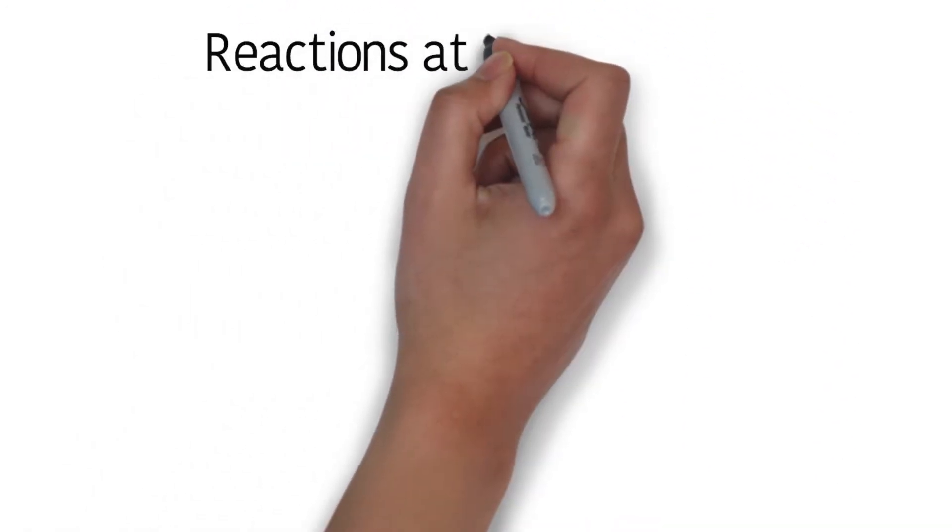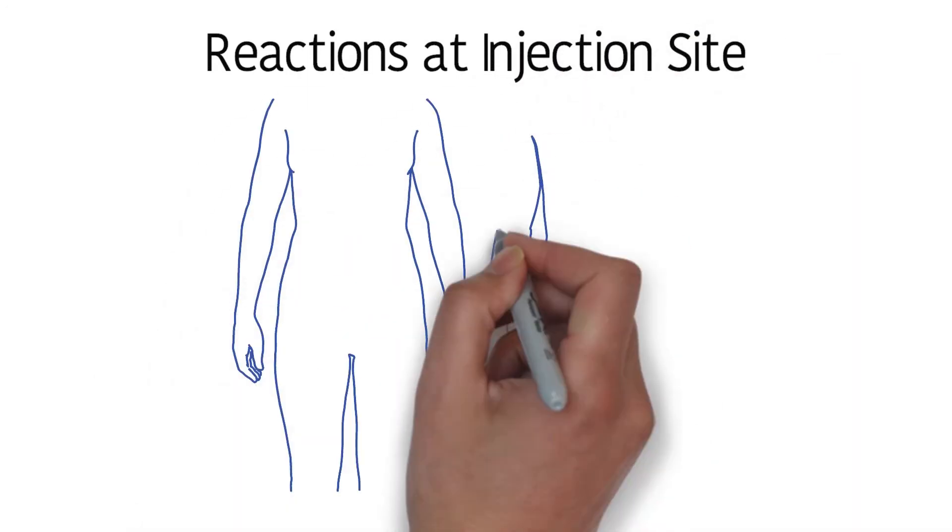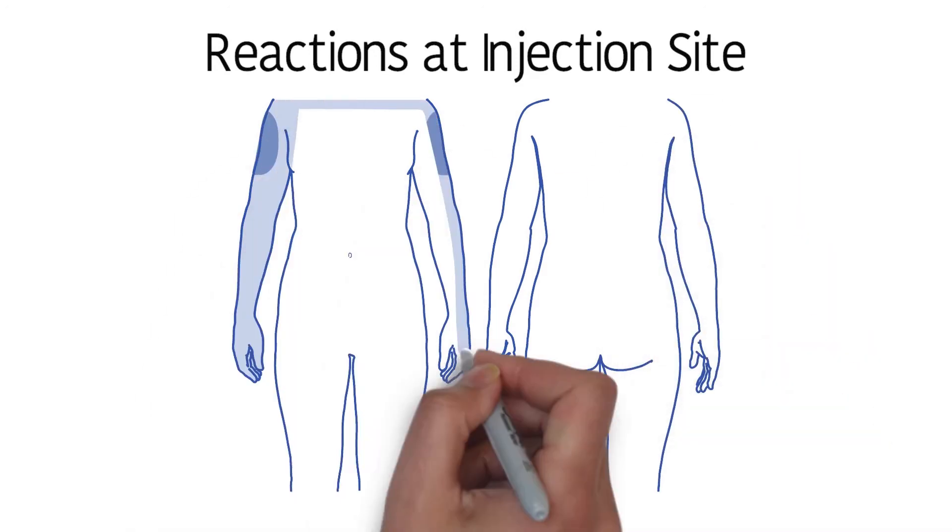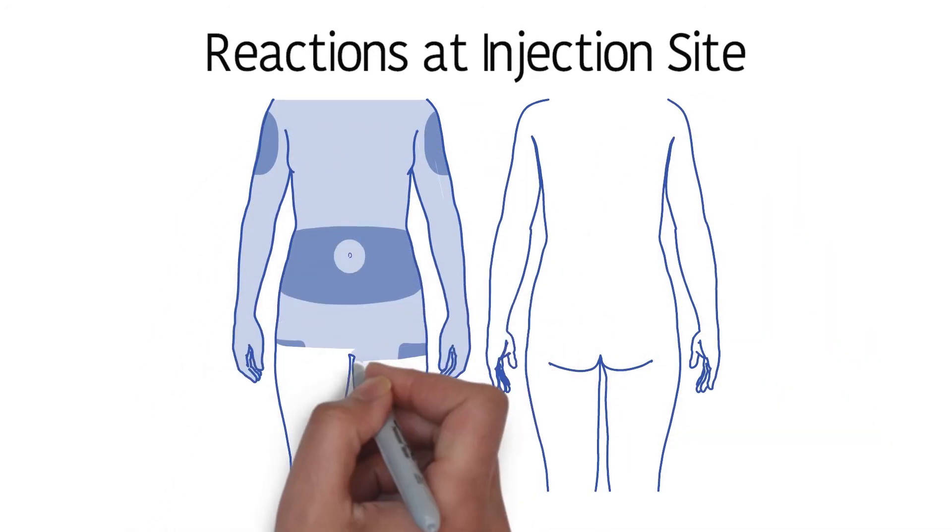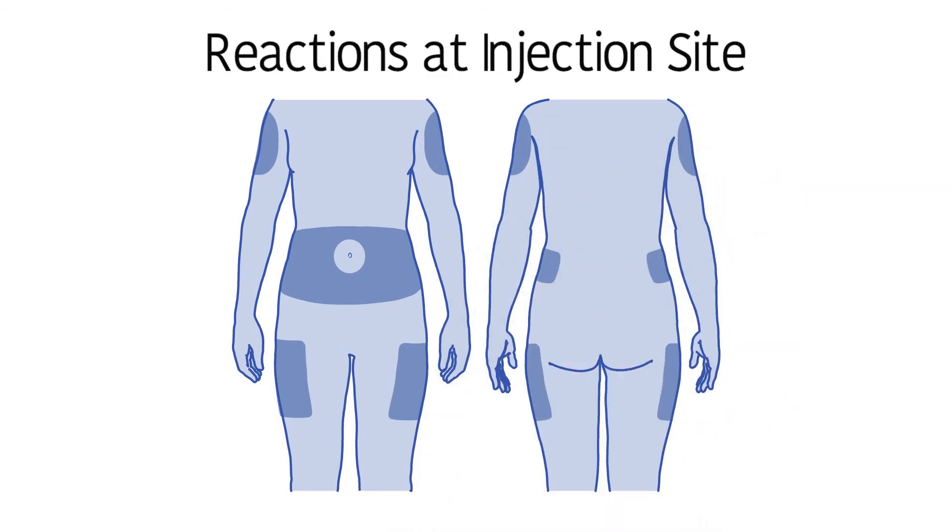Injecting insulin into the exact same spot each time can cause scarring or hard, lumpy areas to form. To prevent this, always rotate your injection sites. Pick a different spot in the same area, such as the abdomen, each time. Using a tracking map can help.